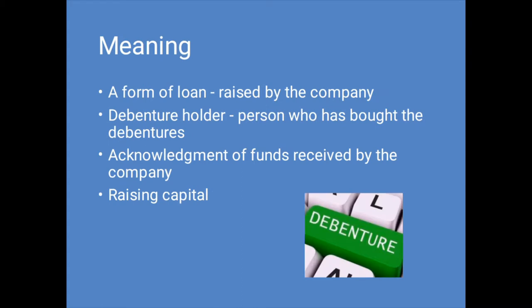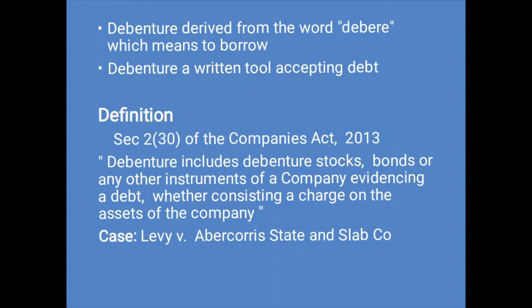A debenture is basically a loan amount the company raised from the public. A person who has bought a debenture and is holding it is called a debenture holder. A debenture holder is a creditor of the company. A debenture is a document issued under the seal of the company. It is an acknowledgement of the funds received by the company equal to the nominal value of the debenture. The issue of debentures is a means significant for raising capital from the market, as contrasted with other modes like preference shares. The term debenture is derived from a Latin word 'debenture' which means to borrow. A debenture is a written tool accepting a debt under the general authentication of the enterprise.